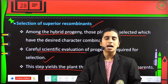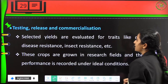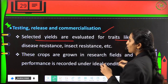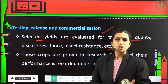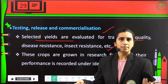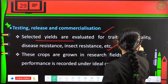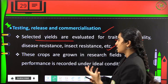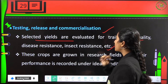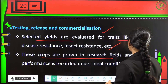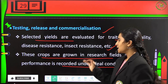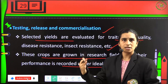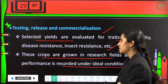This step yields a plant superior to both parents — having only superior qualities without any recessive traits. The final step is testing, releasing, and commercialization. The selected varieties are evaluated for traits like quality, disease resistance, and insect and pest resistance. The crops are grown in research fields and their performance is observed under ideal conditions by scientists.